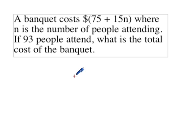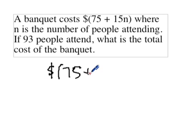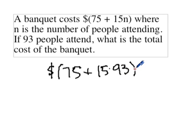All we have to do here is plug in a number for the variable n. Since n is the number of people attending and we have 93 people attending, we'll rewrite the formula with that substitution: 75 plus 15 times n, but n is 93, so this is 15 times 93.